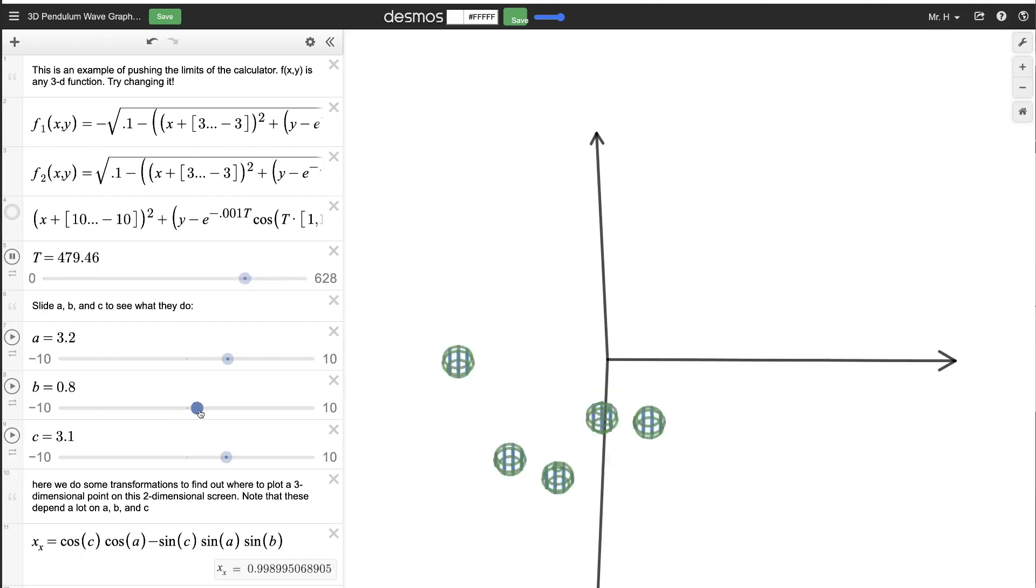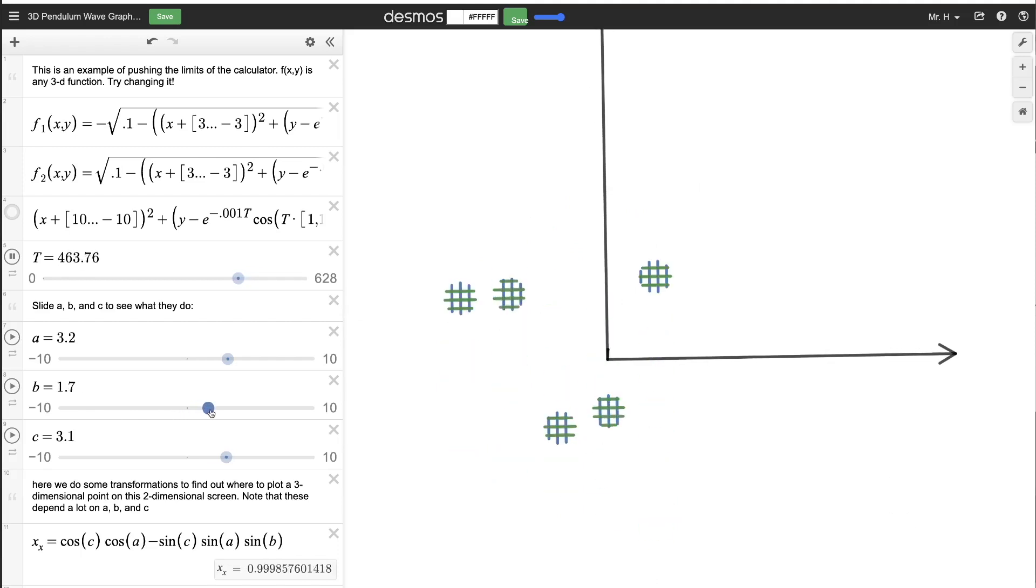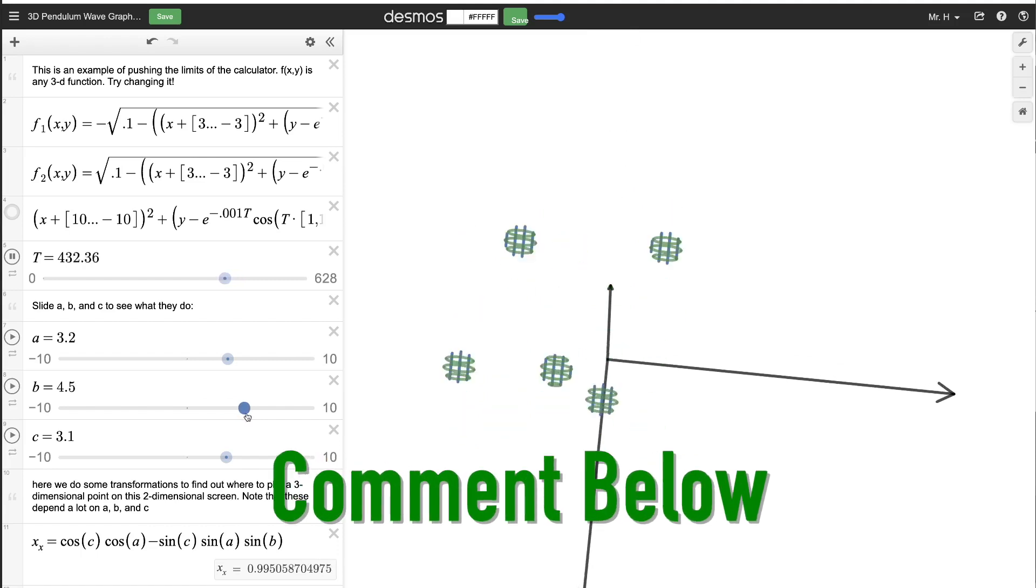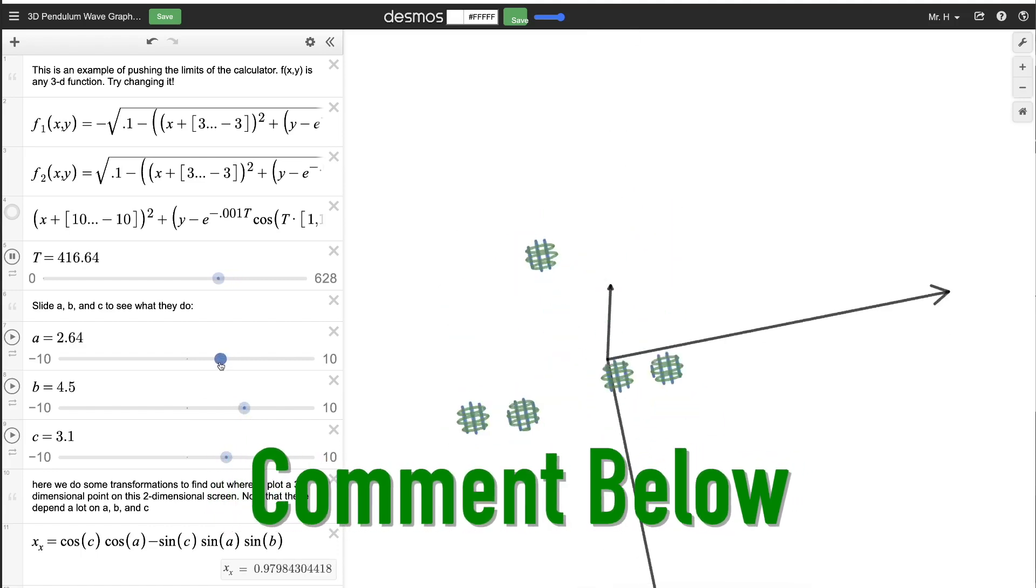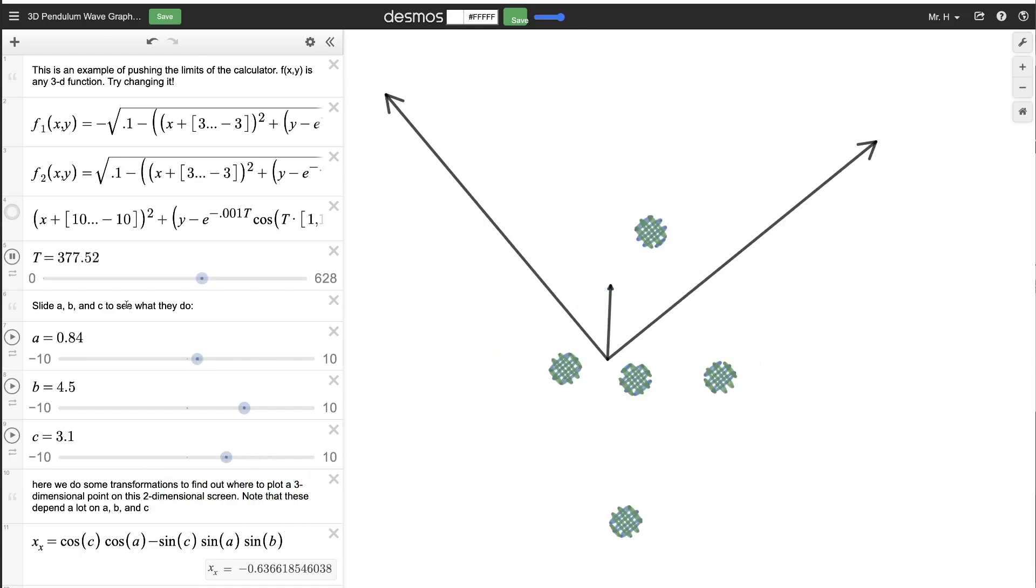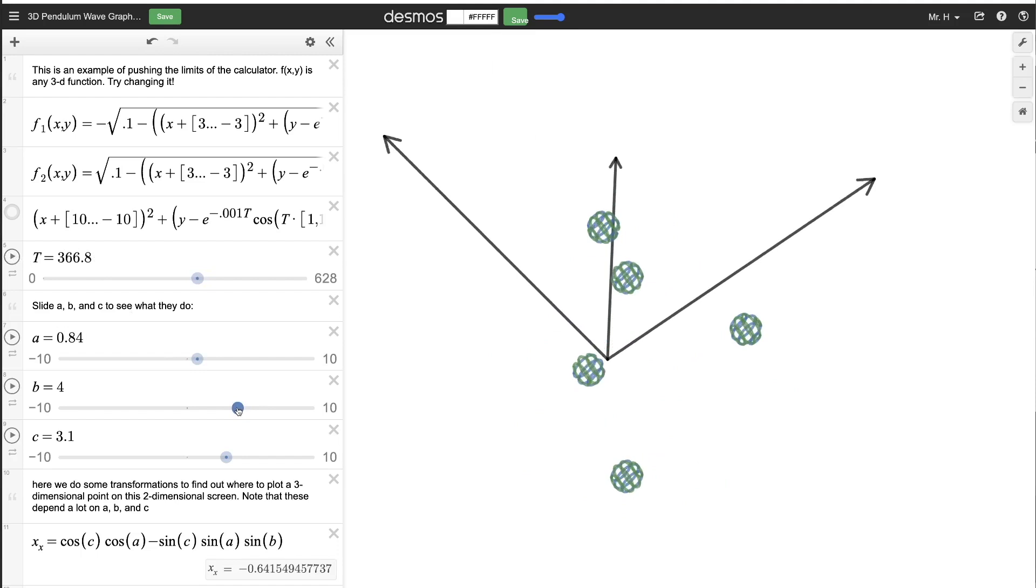I'm interested in building an actual pendulum wave made out of maybe billiard balls and wire and having a large physical model of this. But I thought first, what a great idea it would be to go into Desmos and build a simulation. So I hope you've enjoyed this.